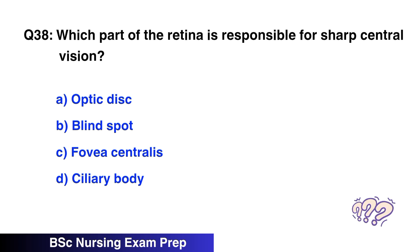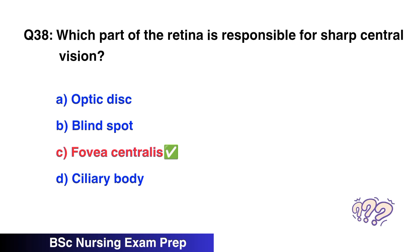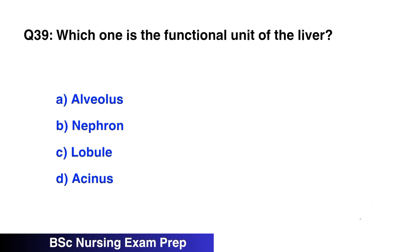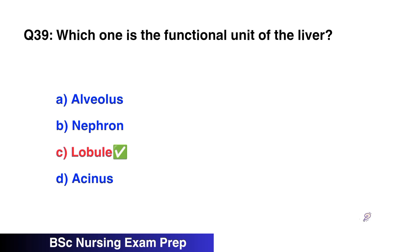Question number 39: Which is the functional unit of the liver? The right option is C, lobule.